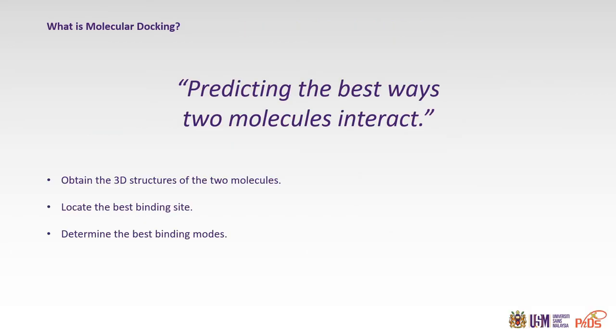Molecular docking basically is predicting the best ways two molecules interact. We have to obtain the 3D structures of two molecules. Those two molecules usually are one for the protein and the other one is for the small molecule or what we call as ligand. Then, we have to locate the best binding site or what is called the active site. After that, we have to determine the best binding modes.